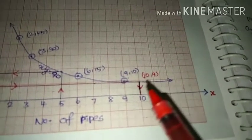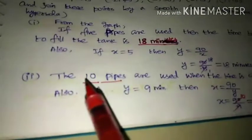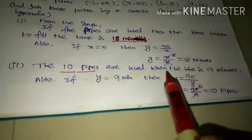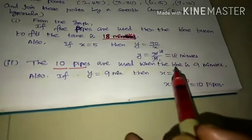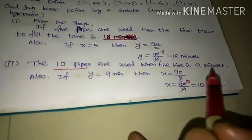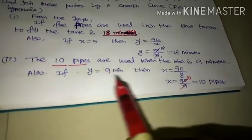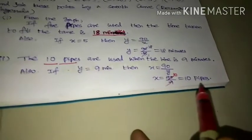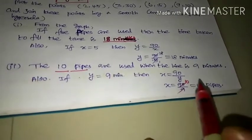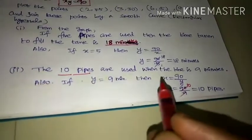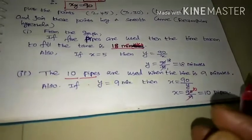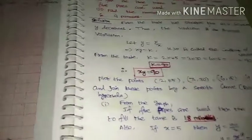From the graph, when y equals 9 minutes, we can read off that x equals 10. So 10 pipes are used when the time is 9 minutes. The answer is y equals 9 minutes and x equals 10 pipes. Question number 4 is completed.